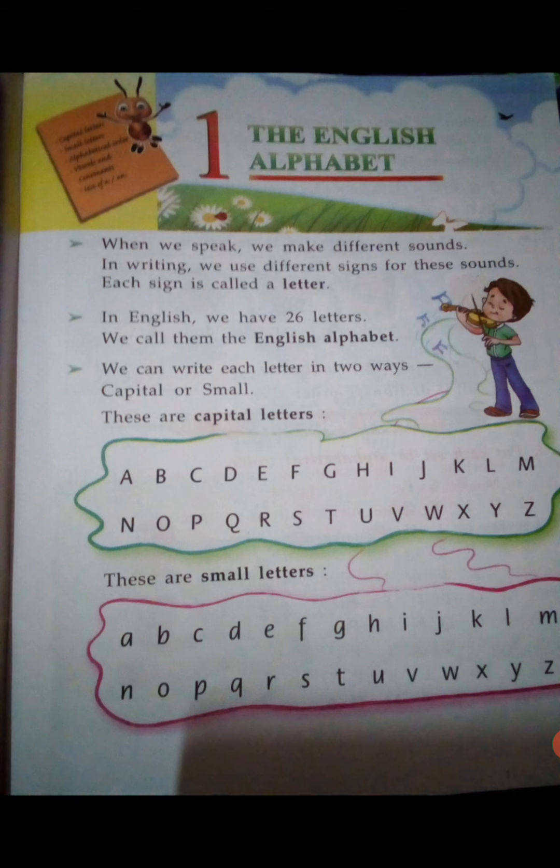When we speak a line, it becomes a sentence. In English, there are 26 alphabets. We always remember the English alphabet — we can write each letter in two ways. In English, we write capital letters and small letters.